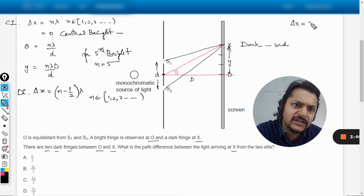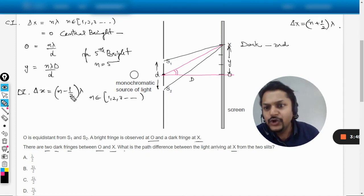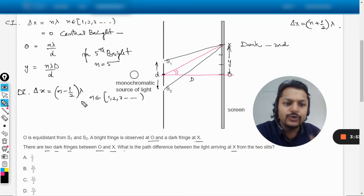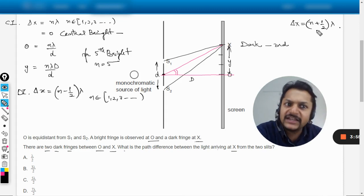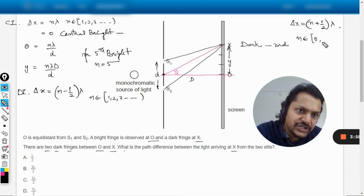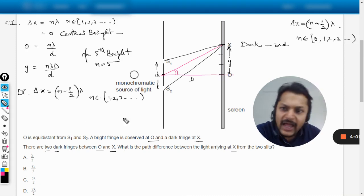Now the problem here is that in your data booklet, this formula is not given. In the data booklet it is given as (n plus half), and many students have asked me this question. Why is it that in the data booklet they are writing this, and you have given the formula (n minus half) lambda?